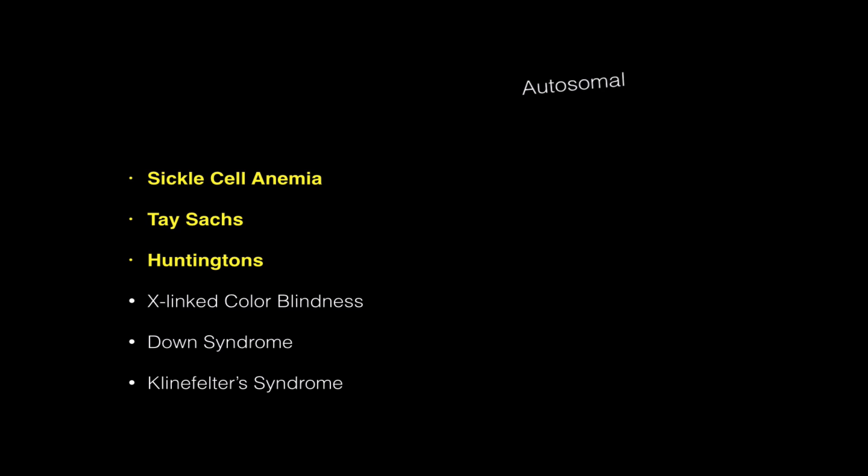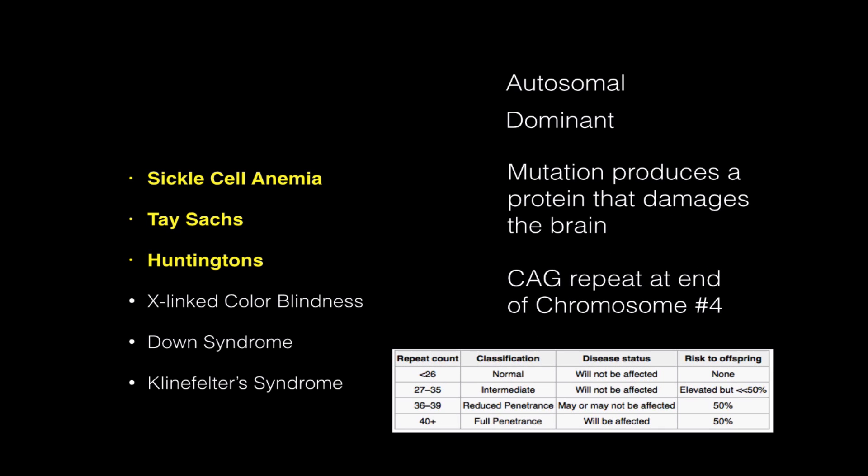Huntington's disease is also autosomal, just like the first two, but it's a dominant mutation. It's a mutation to a protein that slowly damages the brain, and this is a really interesting mutation. It's a CAG repeat at the end of chromosome number four.